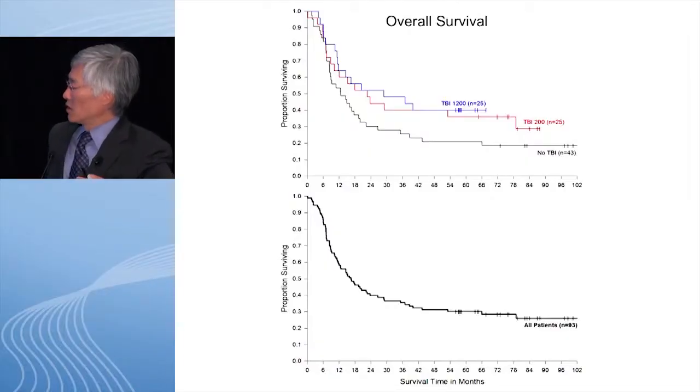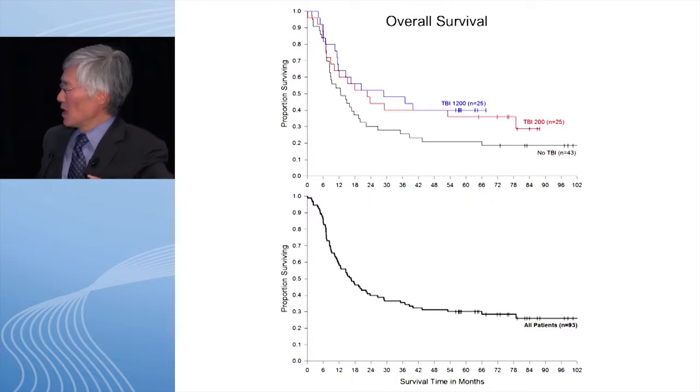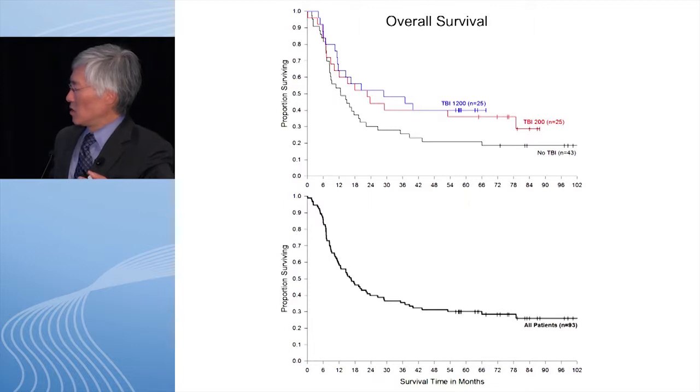These are the overall survival curves. The TBI groups are not statistically significantly different from the simple cyclophosphamide-fludarabine group, so if you put them all together, this is the experience for the 93 patients. There's a plateau of about 30% long-term survival, and almost every tick on that part of the curve is an ongoing complete responder. These patients are 85% with visceral metastases, only 15% with M1A disease, and 80% have had high-dose IL-2 in the past and not responded.